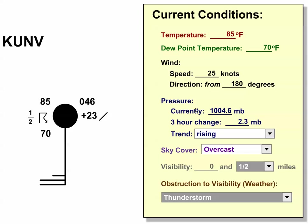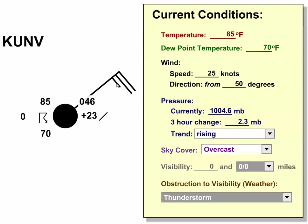We can change the wind direction to, say, 50 degrees. Now we have winds blowing from the northeast to the southwest. That's what it would look like on the station model. We would call this a northeast wind, or a northeasterly wind.